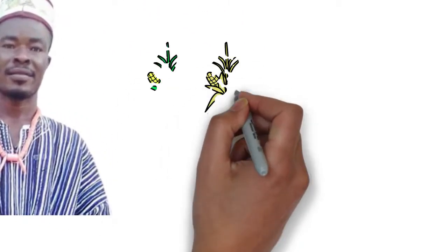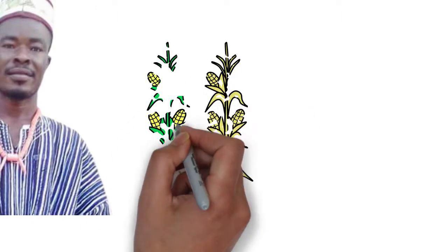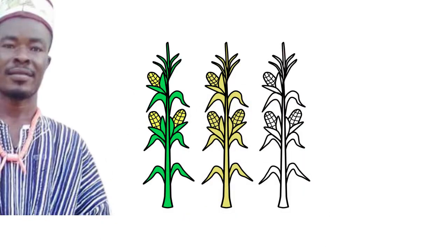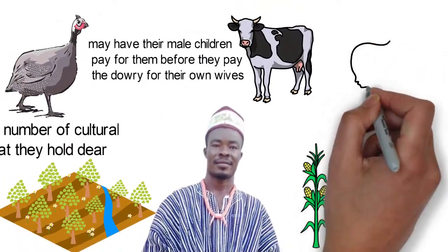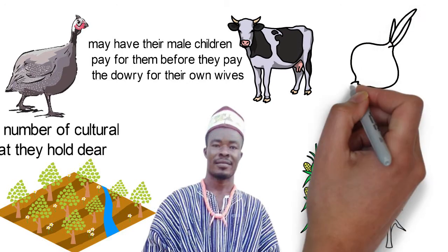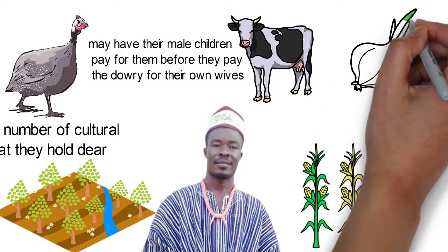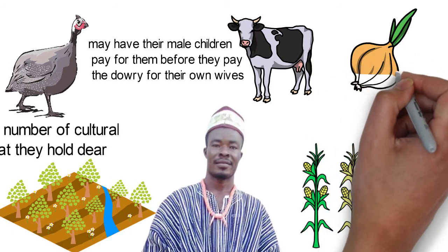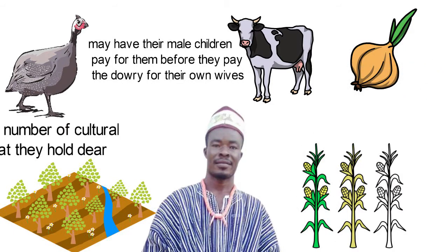Agriculture is an integral part of Kasena Nankana's economy. They mostly grow crops like millet, sorghum, cowpea, bambara beans, okra, cotton, rice, tomatoes, groundnuts, leafy vegetables, and onions.